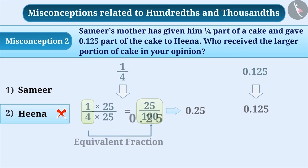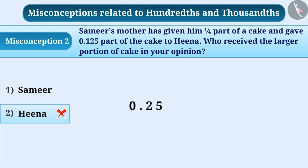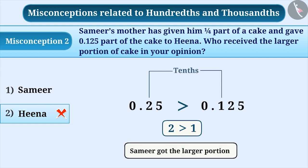Now, we will compare 0.25 and 0.125. Here, the whole part is equal in both numbers. So, we will compare the digits at tenths place. Since 2 tenths is greater than 1 tenth, it is clear that 0.25 is greater than 0.125. Therefore, we can say that Samir has received a larger portion. So, option 1 is the correct answer.